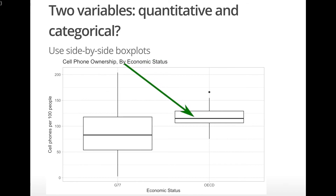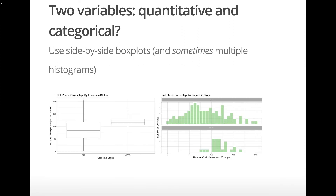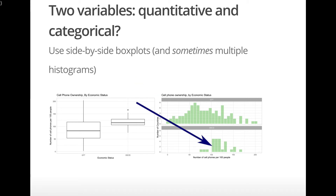Also, OECD countries tend to have more cell phones per 100 people than G77 countries. In addition to side-by-side box plots, we could also make two histograms, one for G77 countries and one for OECD countries. This works fine when you have two groups, but what if we had four groups, or even ten groups? Then it becomes harder to show all of the histograms on the same plot. Comparison of multiple box plots is much easier than comparison of multiple histograms, so generally, side-by-side box plots are preferred for showing multiple distributions.